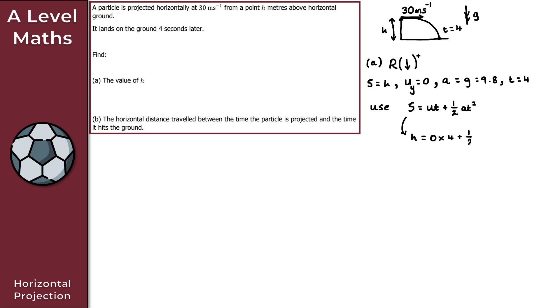Continuing the calculation: h = ½ × 9.8 × 16. Simplifying, ½ × 16 = 8, so h = 8 × 9.8. Putting this into the calculator gives h = 78.4 meters. That gives us the solution to part a.